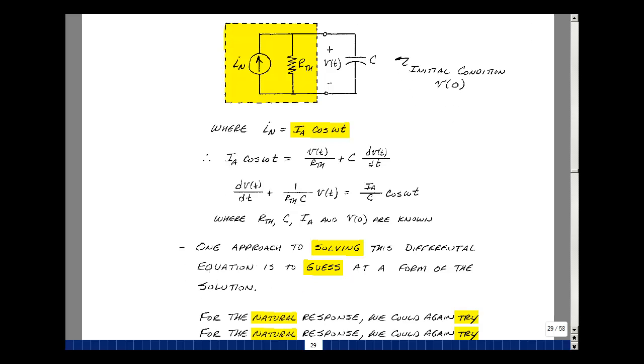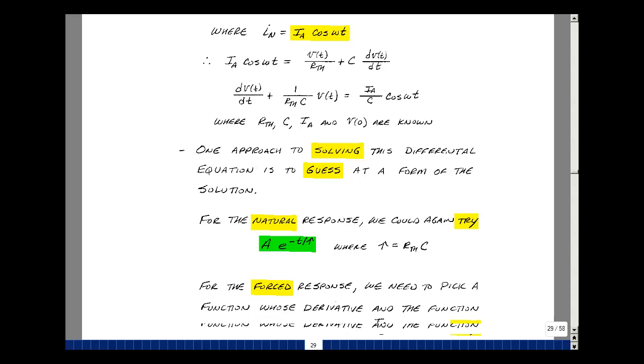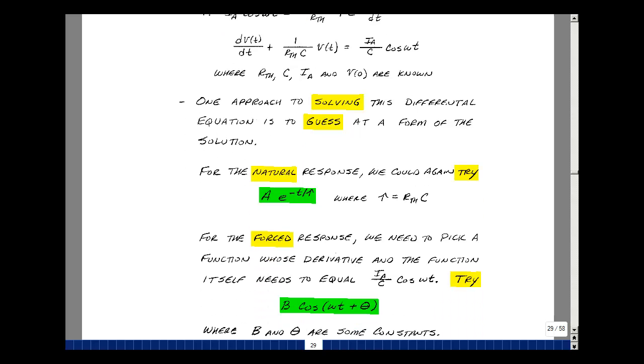Use what we learned from our previous case, that the natural response was of the form A times E to the minus T over tau, where A was a constant, and tau was R Thevenin times C.